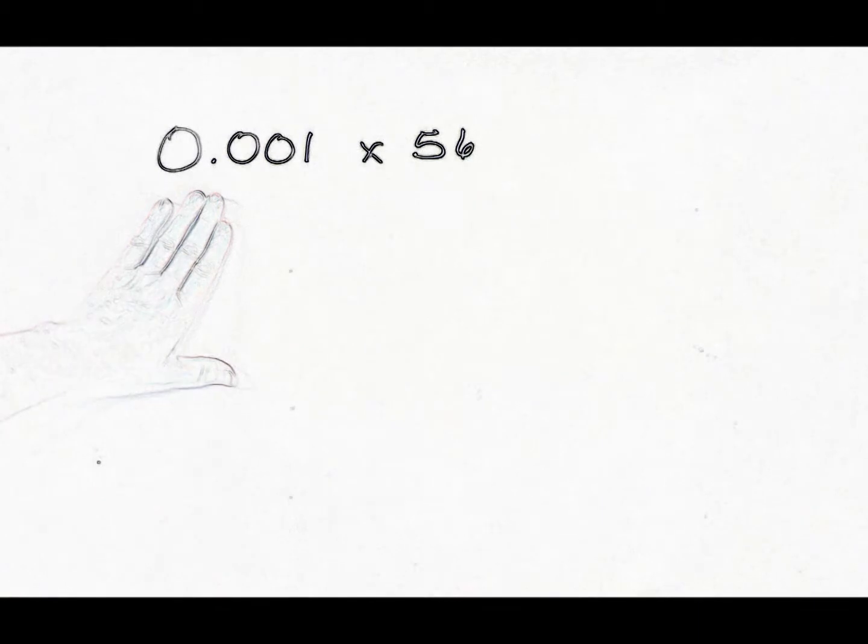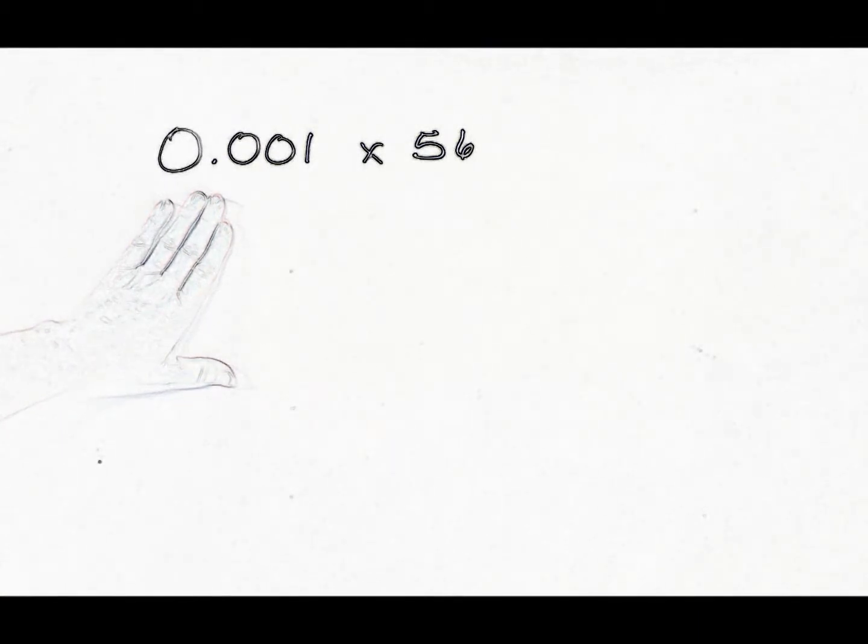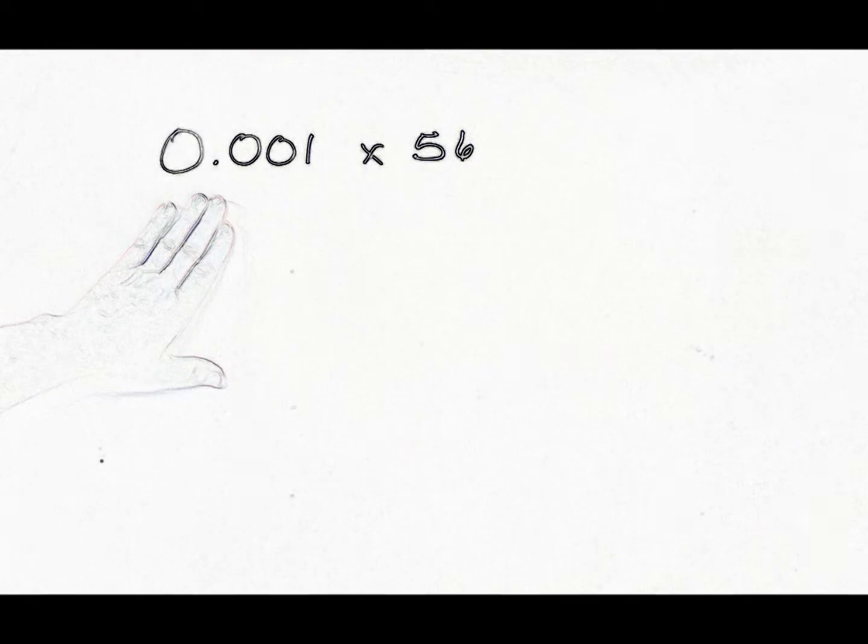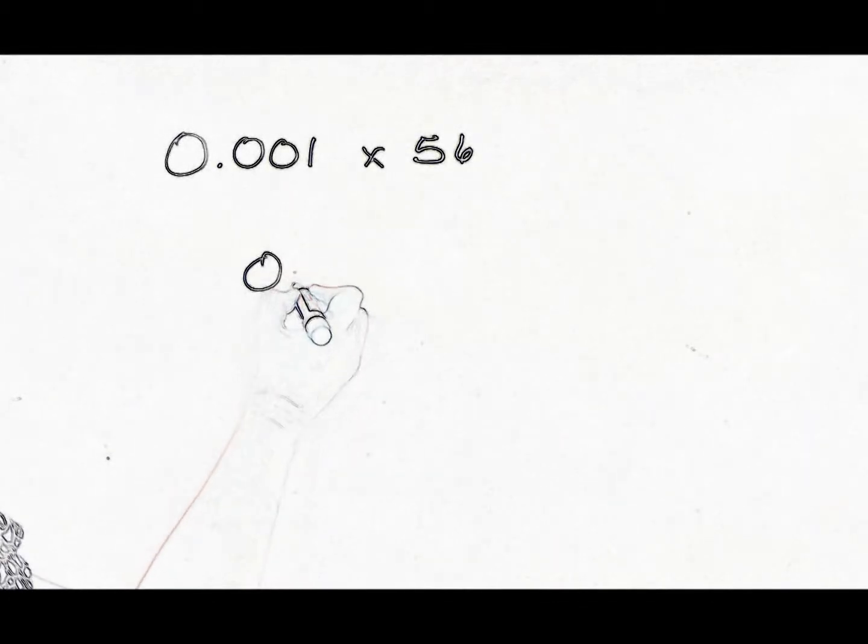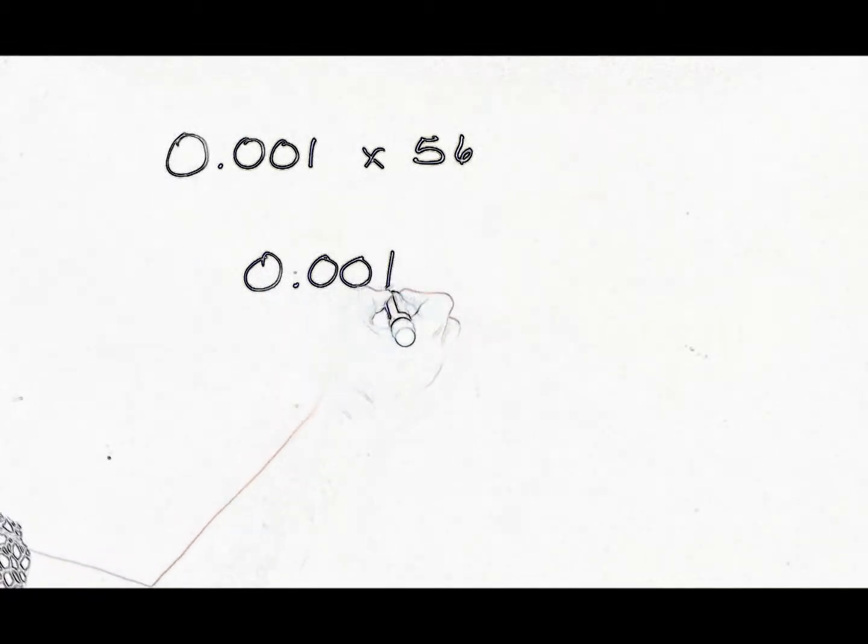One of the things that I like to do when I set this up to multiply it is try to look at the digits. This number has four digits. This number has two. So, let's put the number with the most digits on top. So, you'll want to write it vertically.